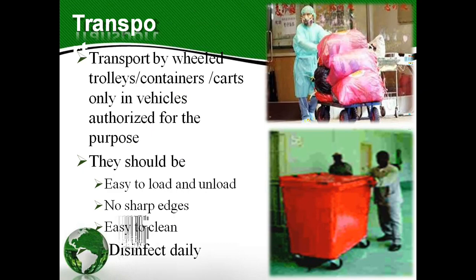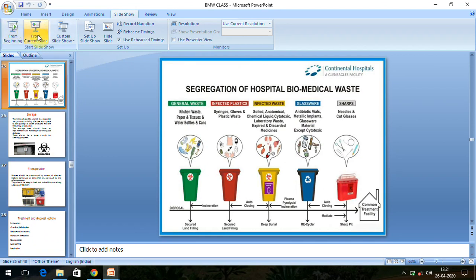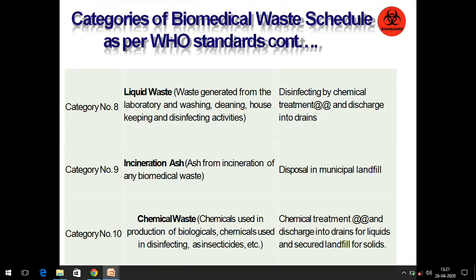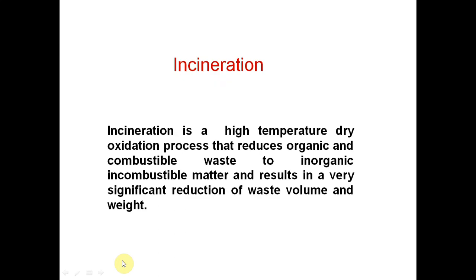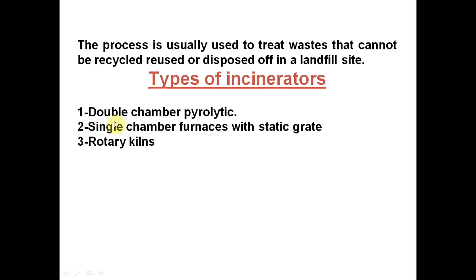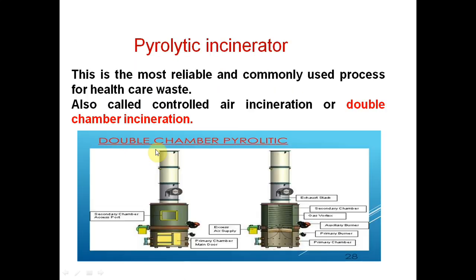Now let's look at the treatment and disposal methods for biomedical waste. The main methods are incineration, chemical disinfection, wet thermal treatment, microwave radiation, encapsulation, safe burying, and inertization. Incineration involves high-temperature oxidation, which reduces organic waste to inorganic incombustible matter, reducing volume by 80 to 90%. There are three types of incinerators: double chamber pyrolytic, single chamber, and rotary kiln.